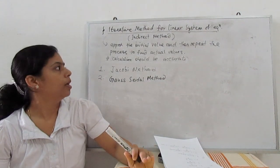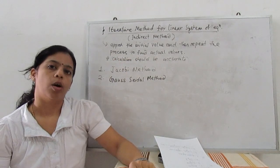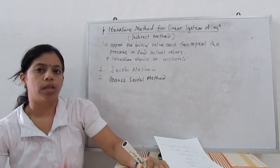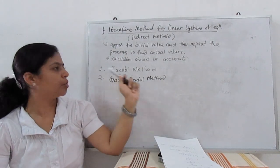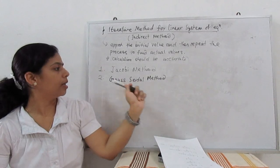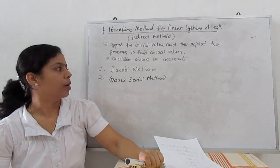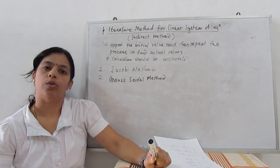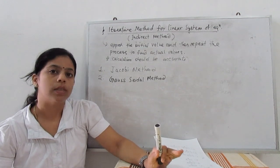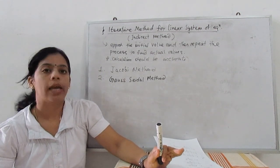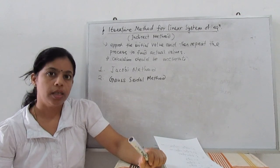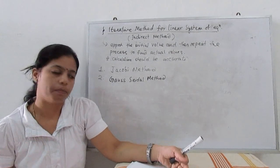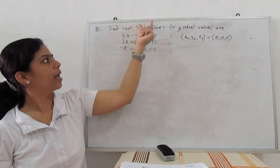You should be very careful with your calculator. There are two iteration methods: one is the Jacobi method and the second is the Gauss-Seidel method. In this video, we learn about the Jacobi method — how to solve a system of linear equations using it. Let's see with one example; it's very simple.